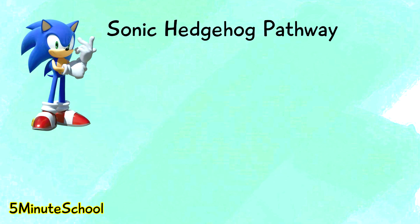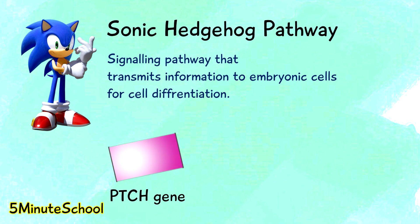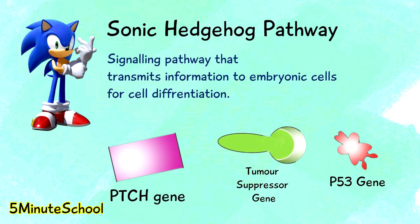The sonic hedgehog pathway is a signaling pathway that transmits information to embryonic cells required for proper cell differentiation, which basically means it's involved in the pathway of transformation of cells from one type to a different type. Mutations in the PTCH gene, tumor suppressor gene, and P53 gene can play a role in the development of basal cell carcinomas.